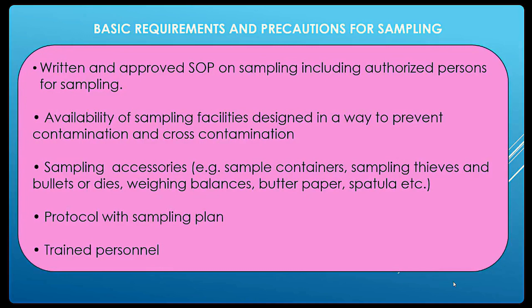Basic requirements and precautions for sampling: the first requirement is a written and approved SOP. As per USFDA and GMP guidelines, everyone working in a manufacturing or packaging plant should work according to defined SOPs and their relevant job descriptions. So, the SOP must be followed while performing sampling.